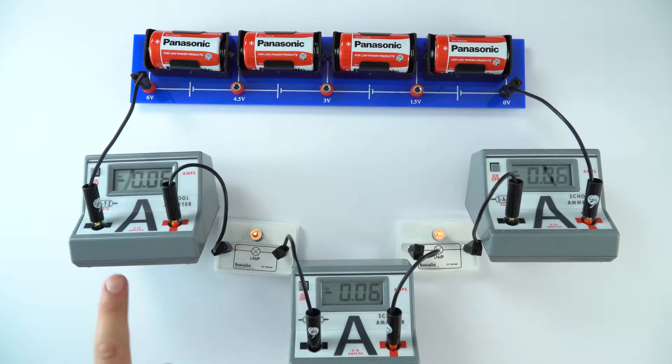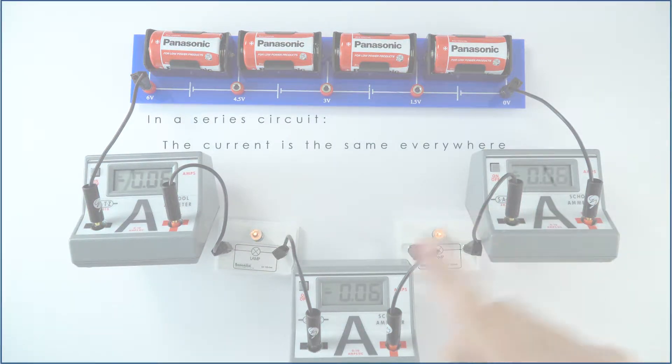But basically what we can see is that we have the same current here, here and here in the circuit. And that's what we find: if you have a series circuit, we have the same current everywhere in that circuit.